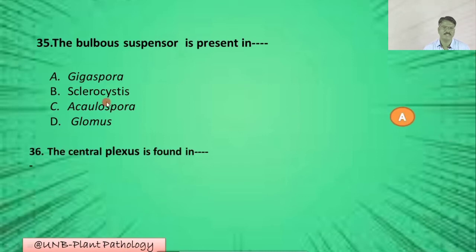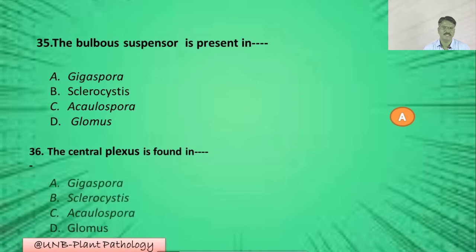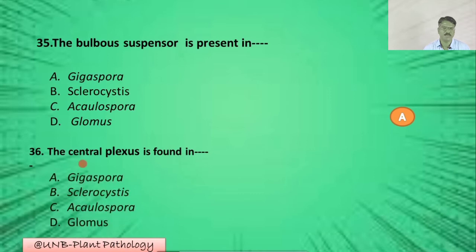Question number thirty-six: The central plexus is found in which genera of mycorrhizal fungi? A: Gigaspora; B: Sclerocystis; C: Acaulospora; D: Glomus. The correct option is B: Sclerocystis.